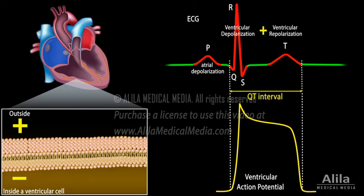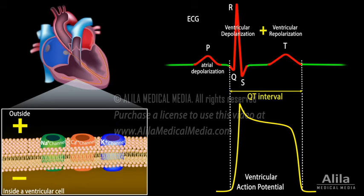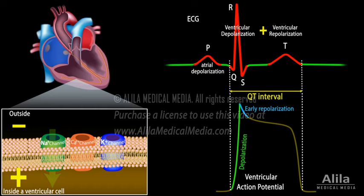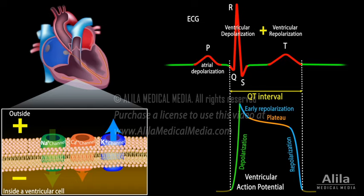An action potential is essentially a brief reversal of electric polarity of the cell membrane. It is made possible by the flow of ions in and out of the cell through specific ion channels. The depolarizing phase is caused by sodium influx, early repolarization is due to initial outflow of potassium, plateau phase occurs when potassium efflux is balanced by calcium influx, and repolarization is when potassium efflux dominates calcium influx. The duration of repolarization is determined by the balance of current flow through these ion channels.